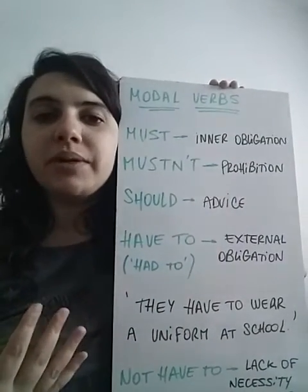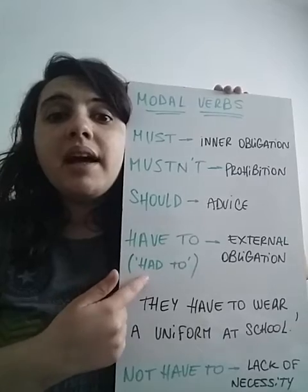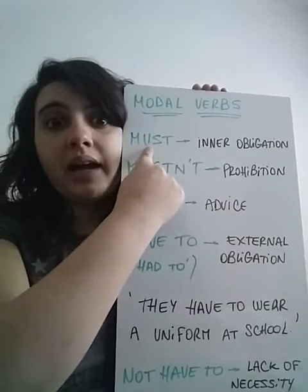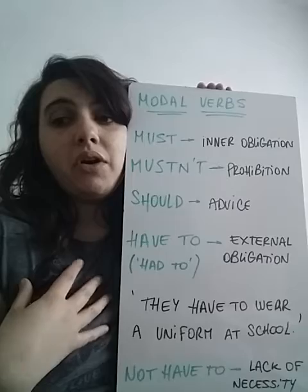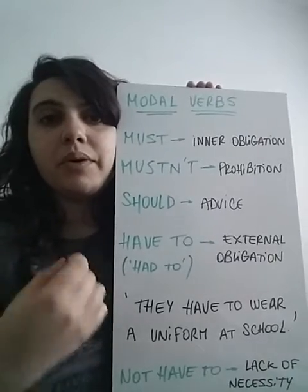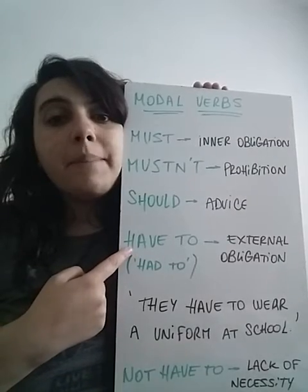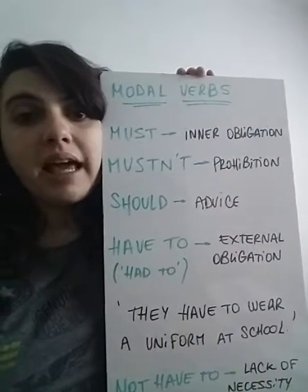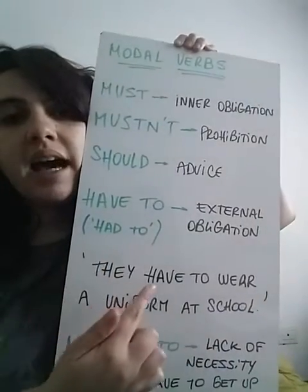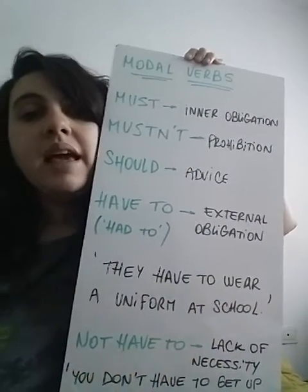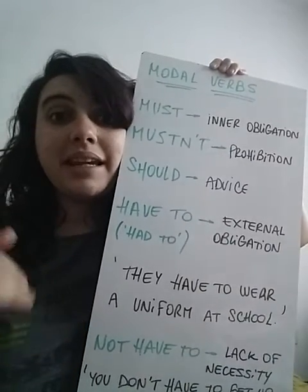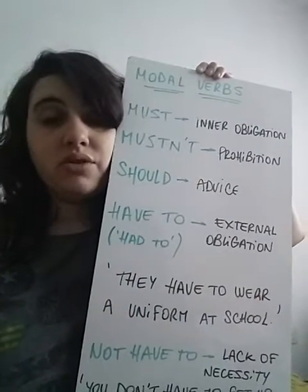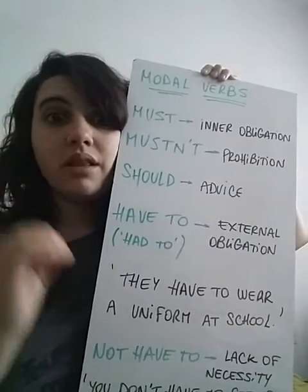And this is when speaking in the present. If we speak in the past, instead of 'have to' we put 'had to.' So the difference between 'must' and 'have to': 'must' is for internal obligation — something the speaker imposes on themselves, something important to you. And 'have to' is for external obligation — something imposed by someone else. For example: 'They have to wear a uniform at school.' This is a rule — we use 'have to' to talk about rules as well. It's a school rule to wear a uniform, so that's an external obligation.